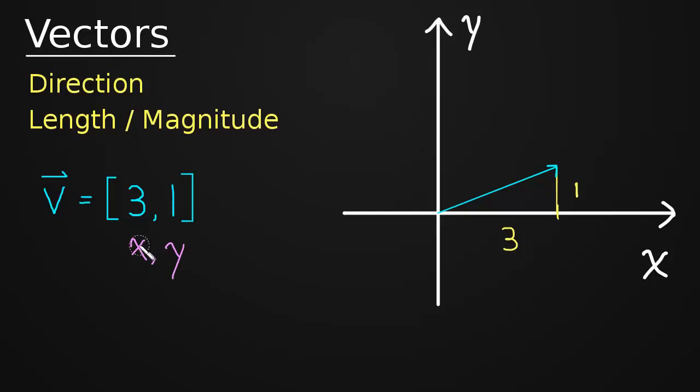And now anyone in the world looking at this vector, V equal to 3, 1, can go ahead and draw that vector if they want to. They know exactly which vector we're talking about when we write that.